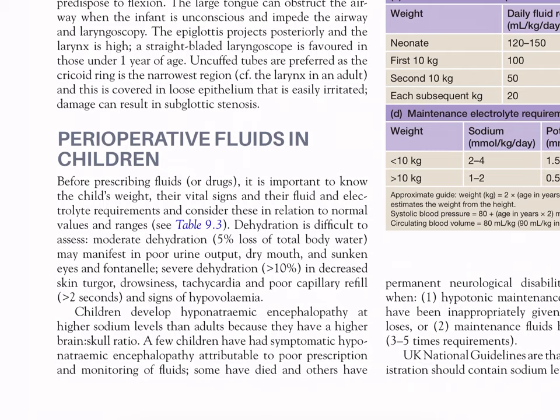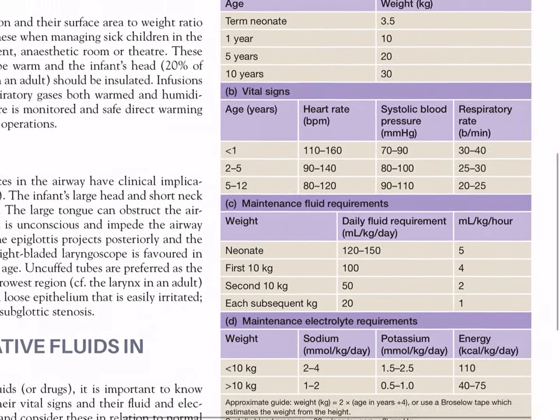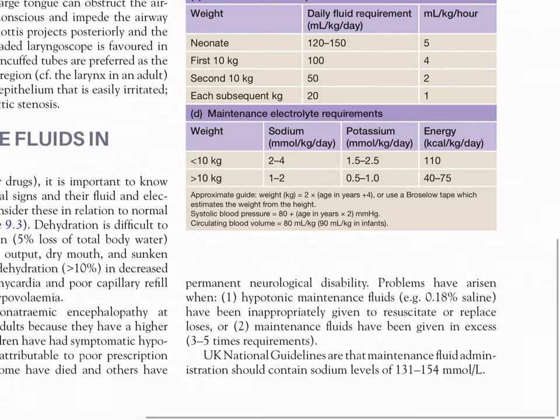Children develop hyponatraemic encephalopathy at higher sodium levels than adults because they have a higher brain-to-skull ratio. Some children have had symptomatic hyponatraemic encephalopathy attributable to poor prescription and monitoring of fluids. Some have died and others have permanent neurological disability. Problems have arisen when hypotonic maintenance fluids — 0.18% saline — have been inappropriately given to resuscitate or replace losses, or when maintenance fluids have been given in excess of 3 to 5 times requirement.